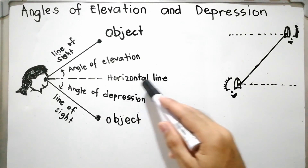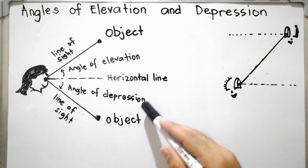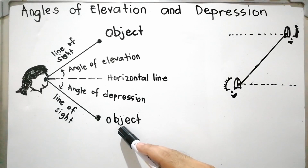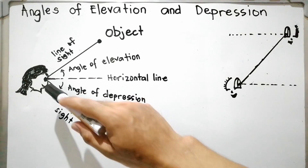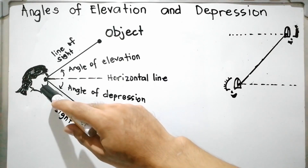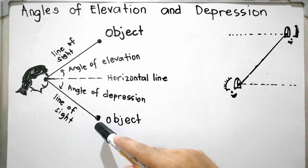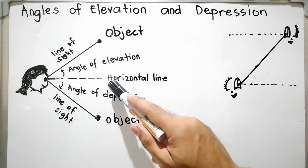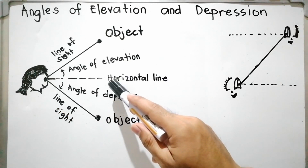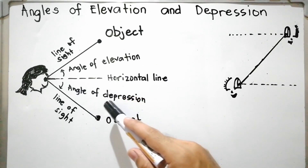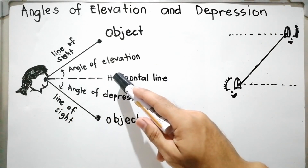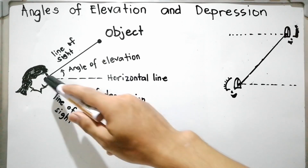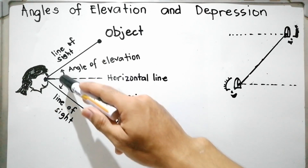For the angle of depression, this is the angle formed from the horizontal line downward to an object. If the object is below the horizontal line, the line of sight is below the horizontal line, and the angle of depression is formed between the horizontal line and the line of sight.